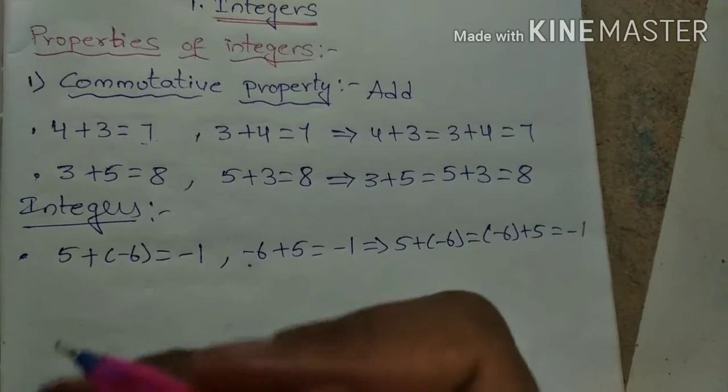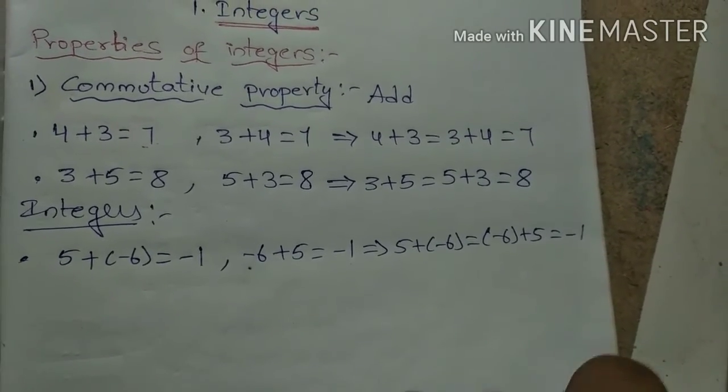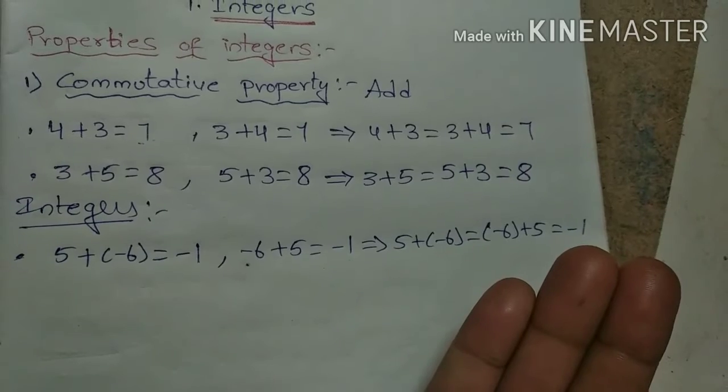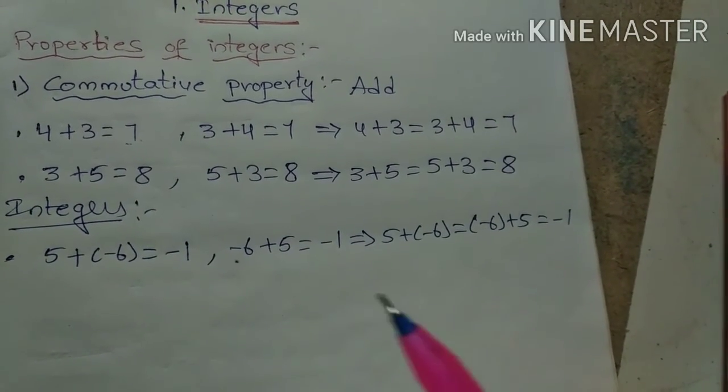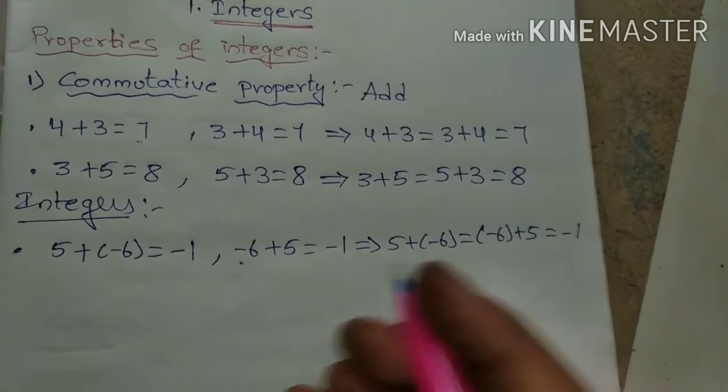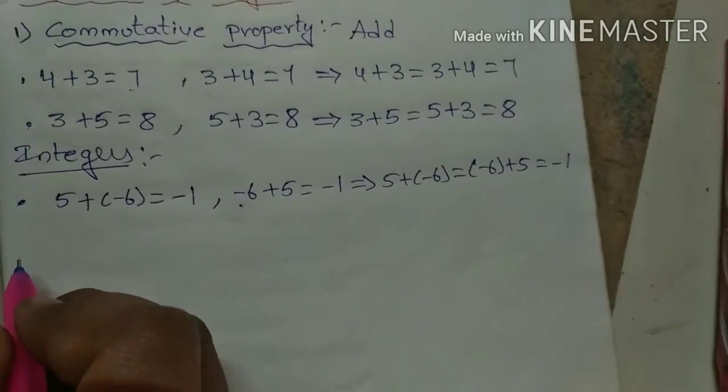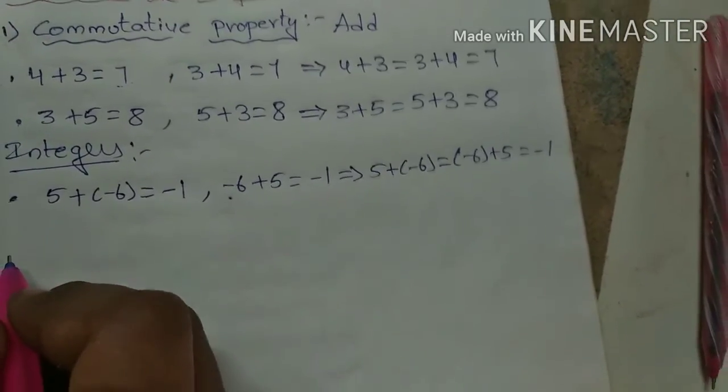And when the order changes, 5 + 6, 6 + 5, the answer does not change. So then we see that addition is commutative for integers.